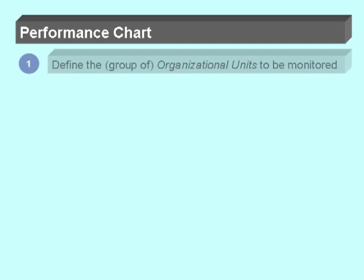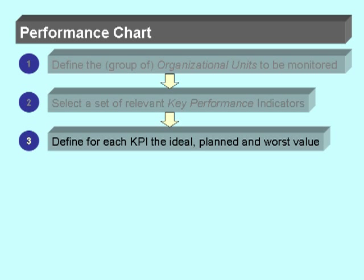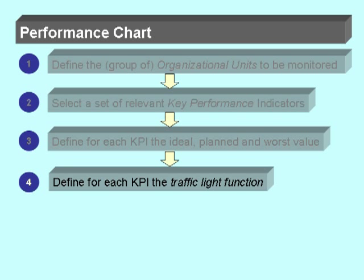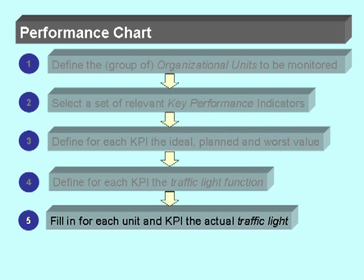Setting up a dashboard, we need to go through a couple of steps. First, we have to define the organizational units to be monitored. Then we have to select a set of relevant key performance indicators. Next, we have to define for each KPI the ideal, planned, and worst value. We also need to define for each KPI a traffic light function.